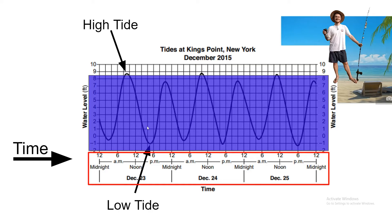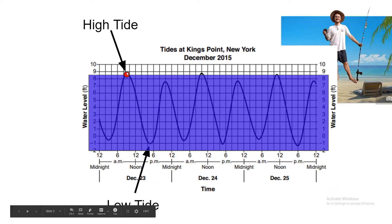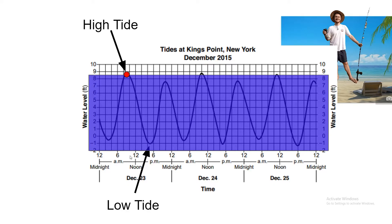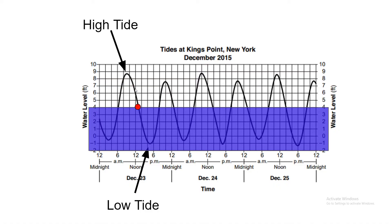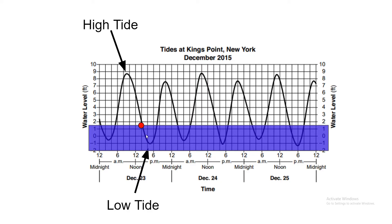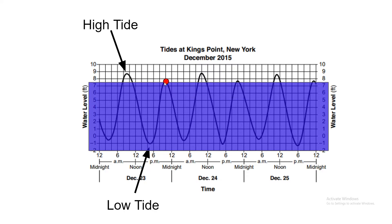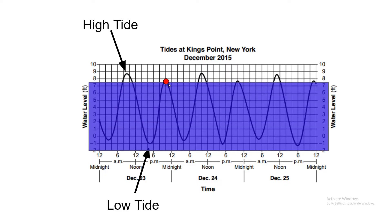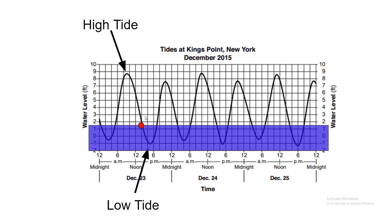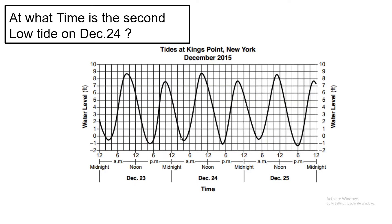Now as time moves on — say it's December 23rd at 9 AM — the water level is going to be really high, and then as we move on to 12 or noon, the water level is going to drop. It's going to get lower and lower. And then it'll come back up again. It goes up and down — the tides go with time.